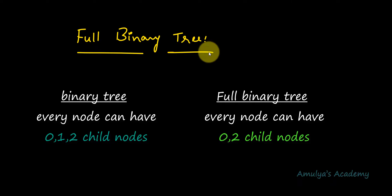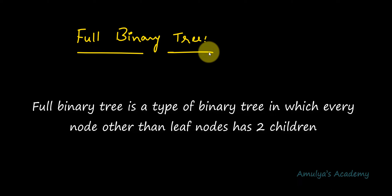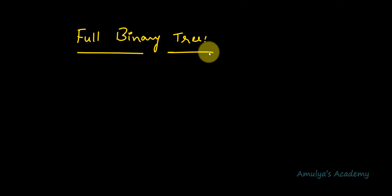In other words, we can also define a full binary tree as: a type of binary tree in which every node other than the leaf nodes has 2 children. Both definitions are the same — just different words. In a full binary tree every node can have 0 or 2 child nodes.